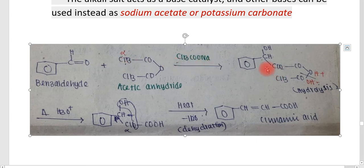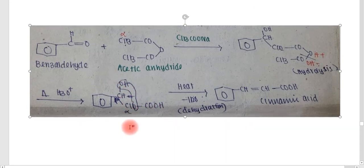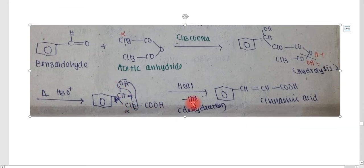In the mechanism, a new carbon-carbon bond is formed — CH₂COO-COCH₃ — followed by hydrolysis. Then elimination of water (dehydration) takes place from this compound. This dehydration is required to form cinnamic acid, which is the desired product.